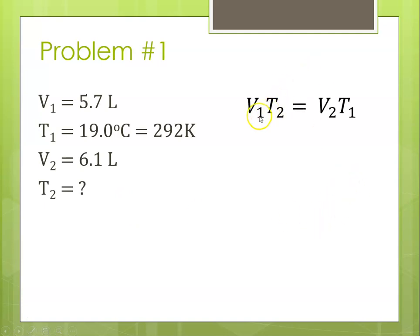Recalling that for Charles' Law, V1 over T1 equals V2 over T2, and cross-multiplying, we get V1 T2 equals V2 T1. Solving for T2, T2 is V2 T1 over V1.